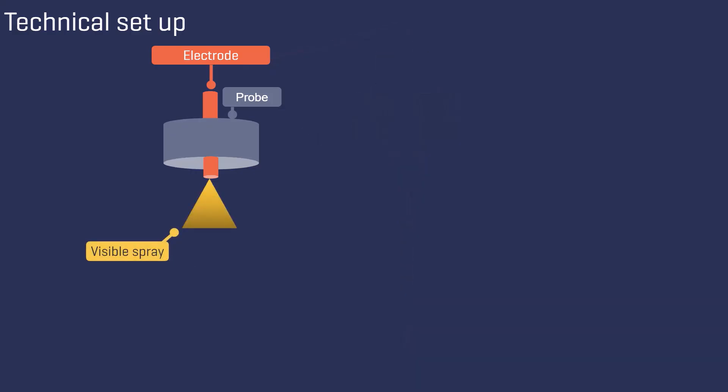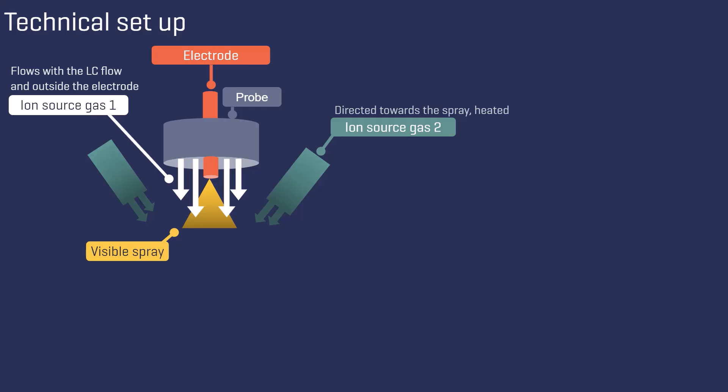The process is supported by different gas flows. Ion source gas 1 flows in the same direction as the LC flow, between the inner wall of the probe and the outer surface of the electrode. Ion source gas 2 is directed towards the spray and heated by the heaters.